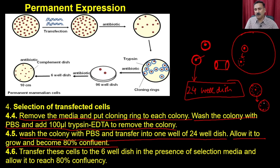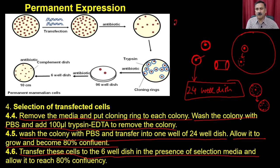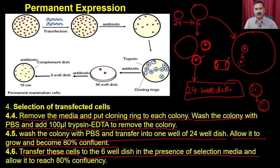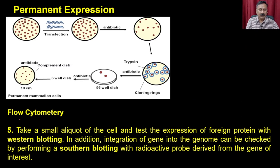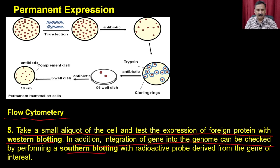Allow the cells to grow and become 80% confluent, then transfer these cells to a 6-well dish in the presence of selection media and allow them to grow. You are progressively scaling up — from a 24-well dish to a 6-well dish to even larger dishes — until the cells grow in large quantities. Another method is to use flow cytometry. Take a small aliquot of cells and test the expression of the foreign protein with western blotting. Integration of the gene into the genome can also be checked by Southern blotting.